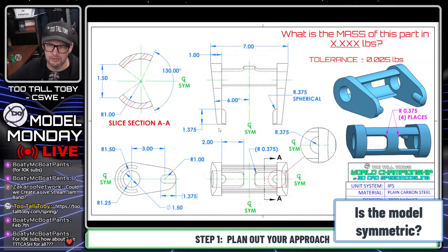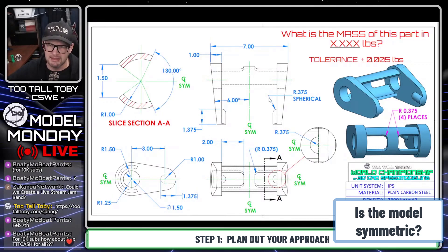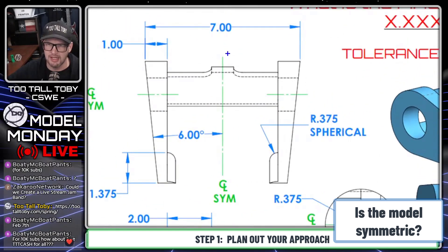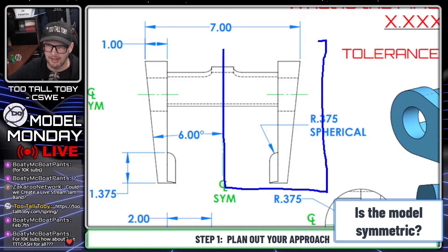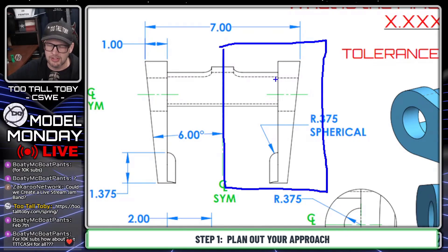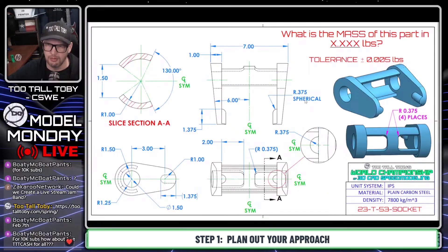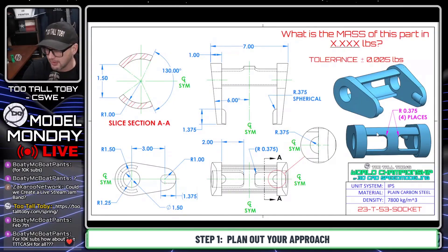This model has a lot of symmetry in multiple directions, so I'm definitely going to take the approach of creating just half of the model. The question then becomes what my features are going to look like, and whenever you're coming up with your game plan...